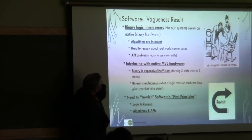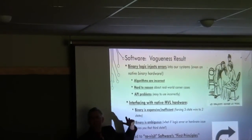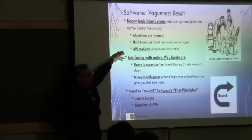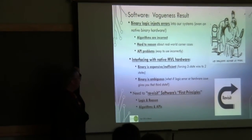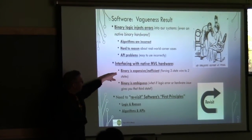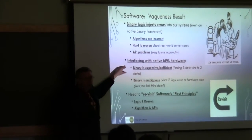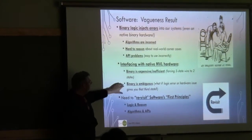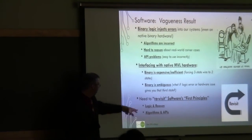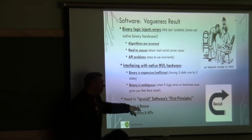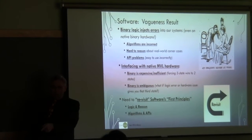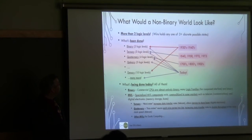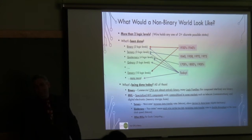Binary logic: our algorithms are hard to reason about, and there are API problems. Interfacing with hardware that has more states under the hood — working with binary is inefficient, even though it can be done. The ambiguous thing is what we're after. The code actually comes after Plato and Aristotle.